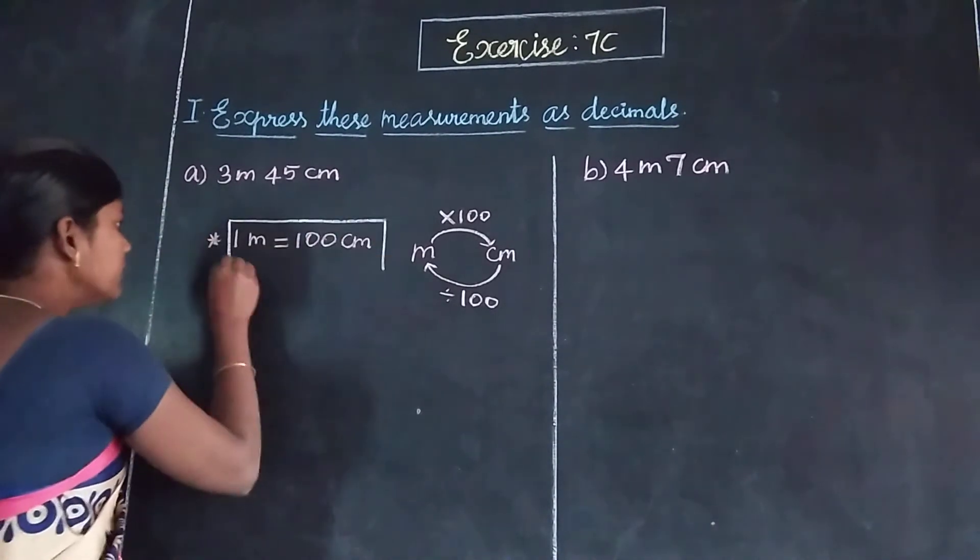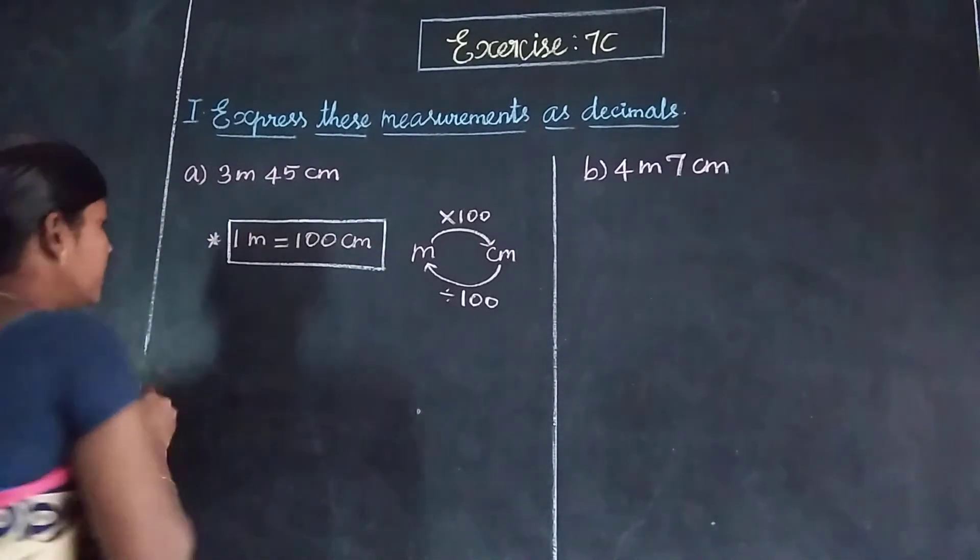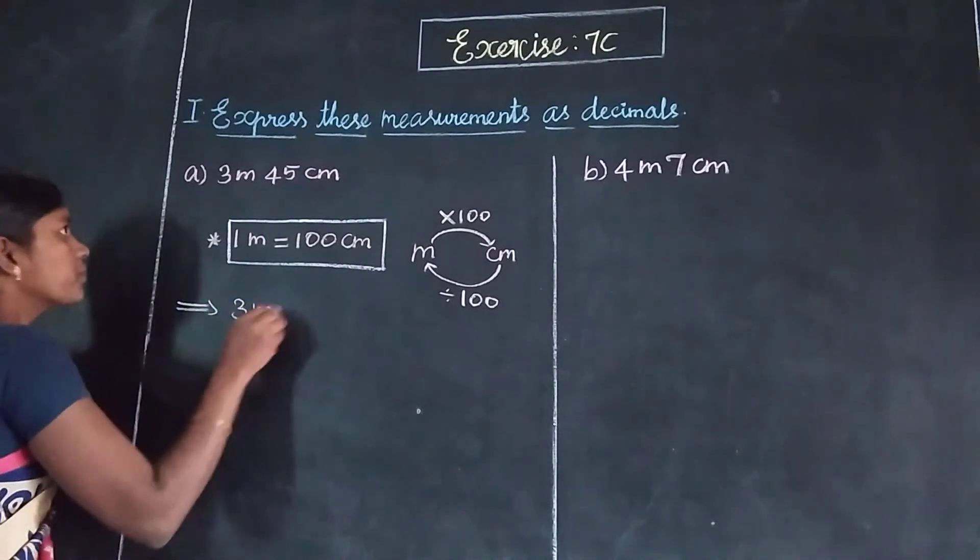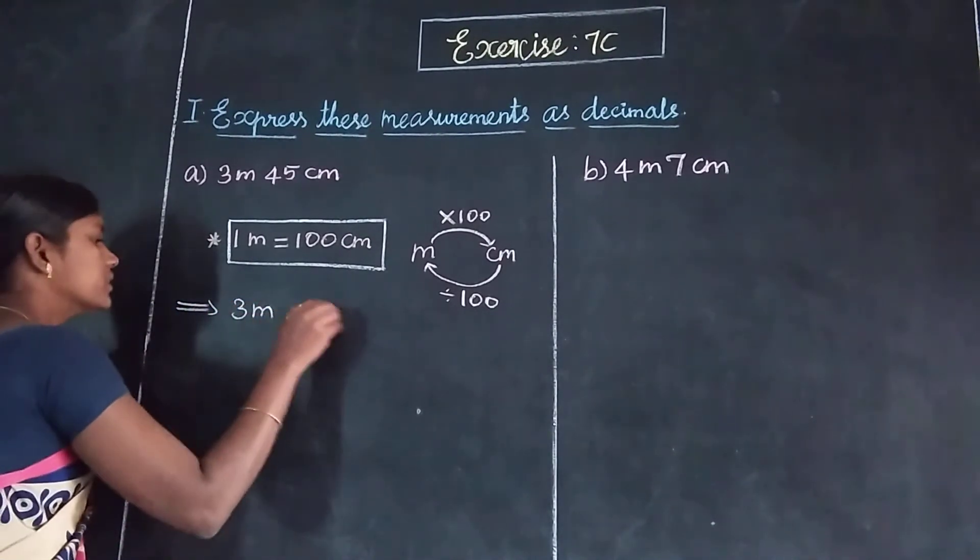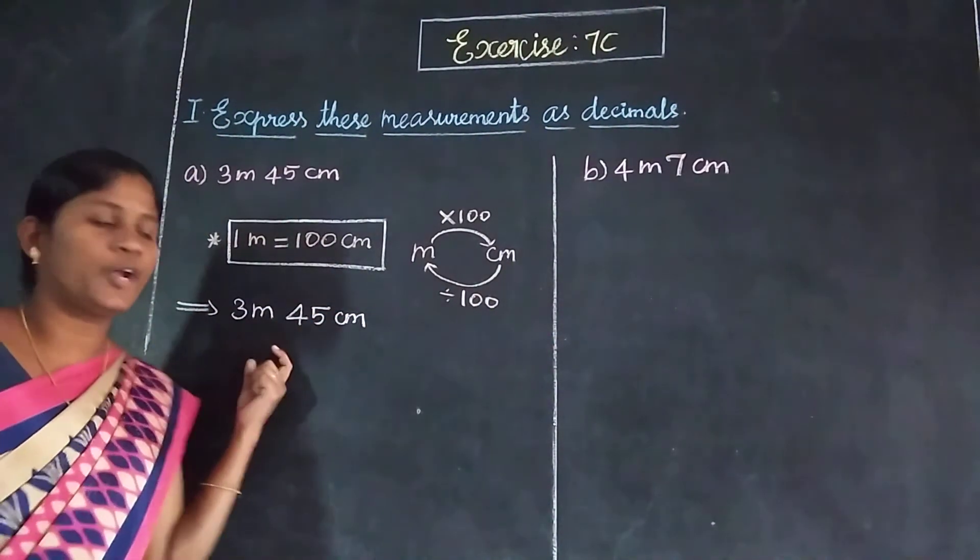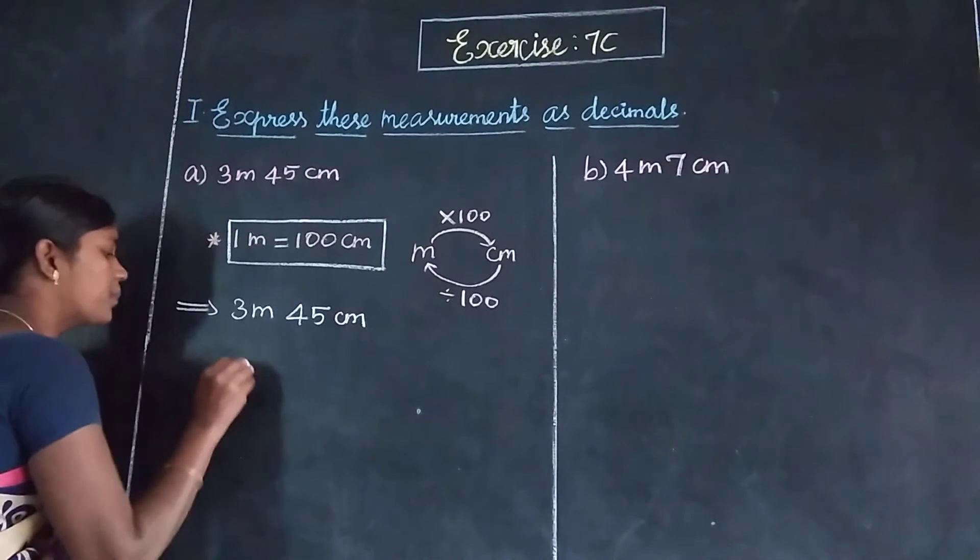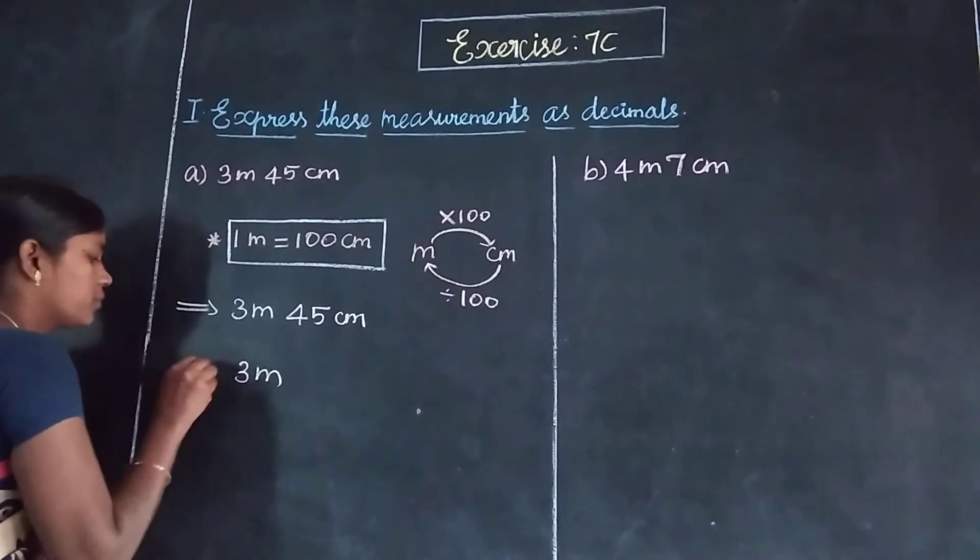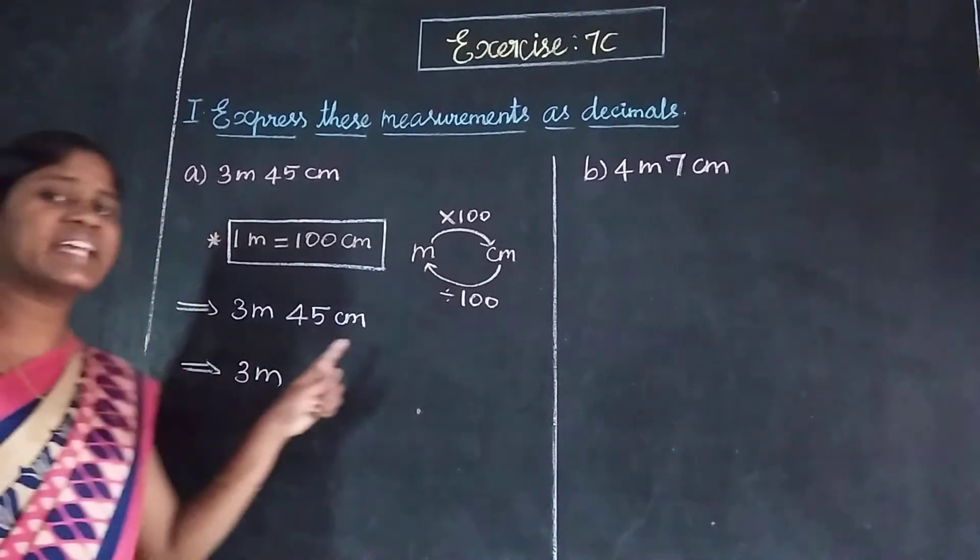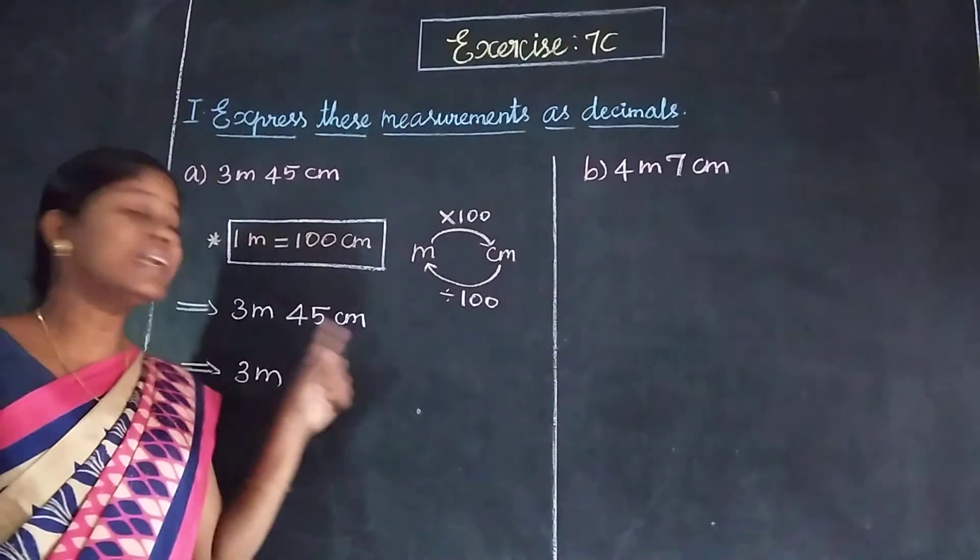Let me give the question. 3 meters 45 centimeters. For decimals, we answer in meters. 3 meters, we can write directly. 45 centimeters, we need to convert to meters.